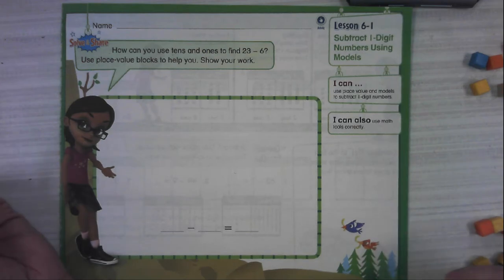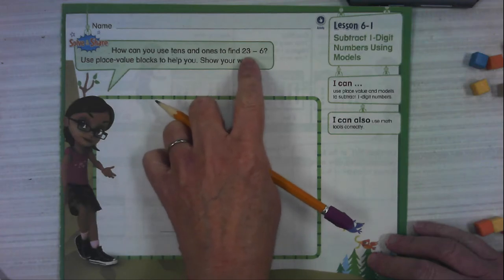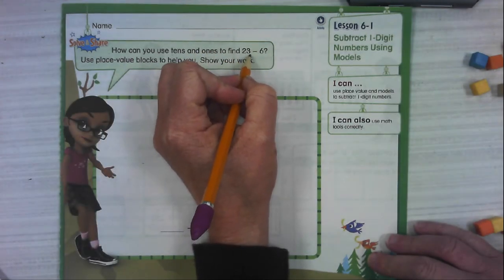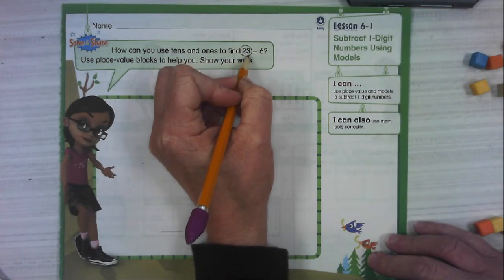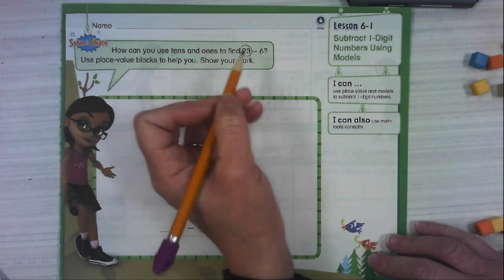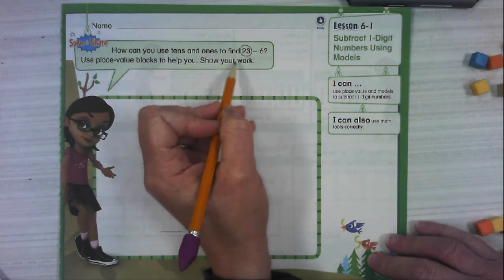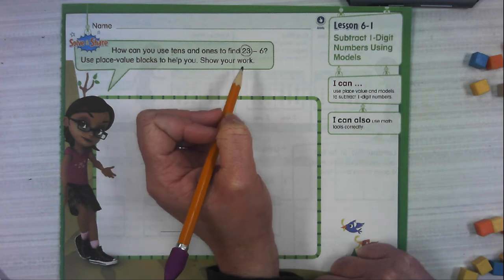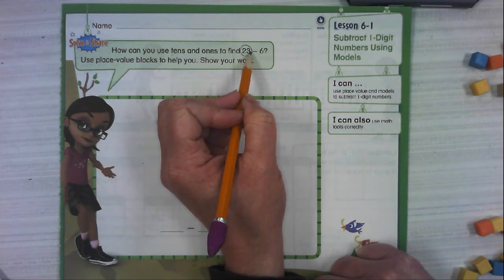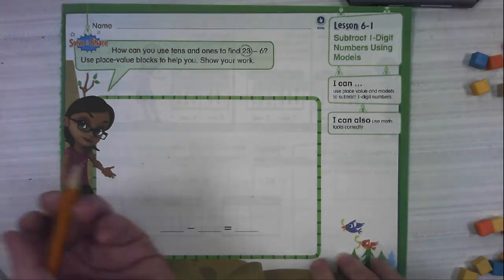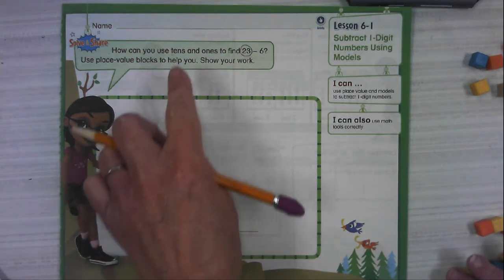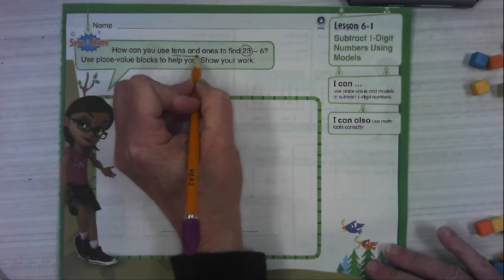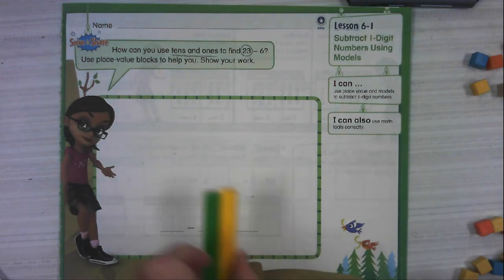So subtraction is a little bit different than addition. In addition, we model both of our numbers. For subtraction, we are only going to model the minuend, which is the number that we're starting with. Because if you think about this, we're going to work on 23 minus 6. If I have 23 of something and I take 6 away, the reason we don't model that 6 is because that's something we're getting rid of. If we model it, then it looks like we're getting 6 more. So we're going to use tens and ones, which is place value, to find 23 minus 6.